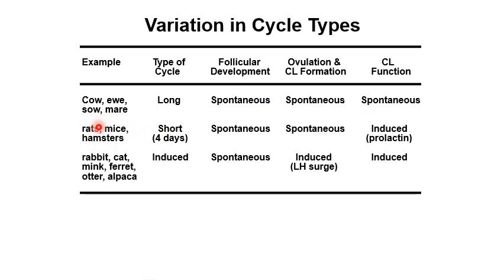For rodents such as rats, mice, and hamsters, they have a short cycle of only four days. A fully functional CL is induced by the release of prolactin during breeding, so CL function is considered induced. If they fail to be bred, they won't produce prolactin and will continue cycling every four days. If prolactin is released — whether or not they become pregnant — a CL is maintained for the length of what pregnancy would be.